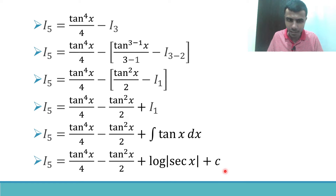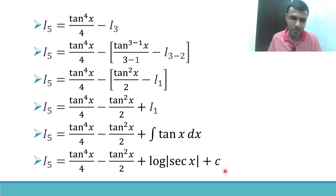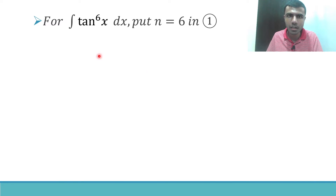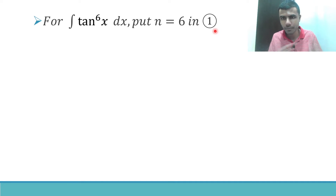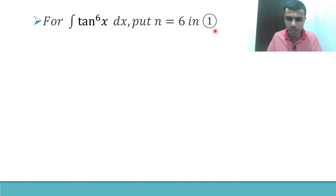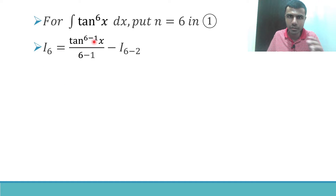We're not done yet — we need to find the integral of tan^6 x dx. For this, put n = 6 in the reduction formula I_n. So I_6 = tan^5 x / 5 − I_4.